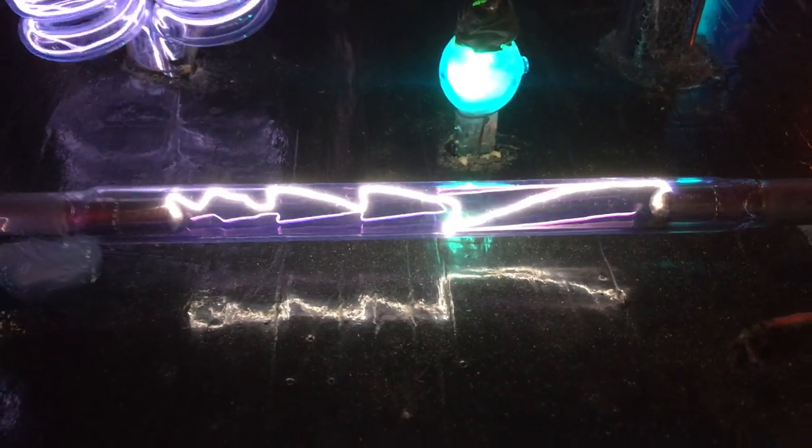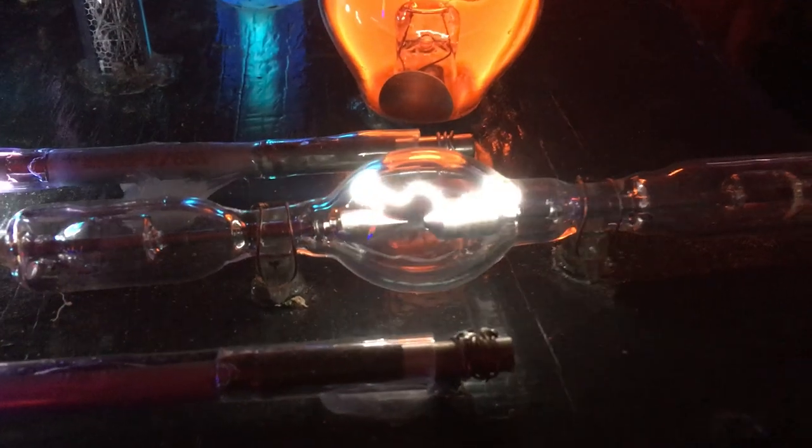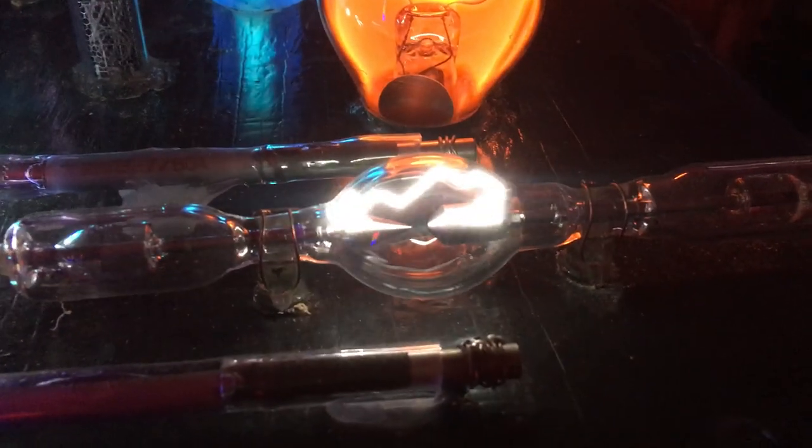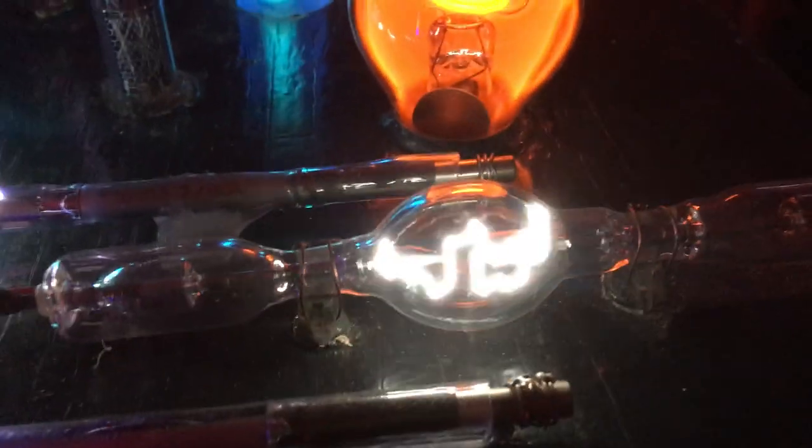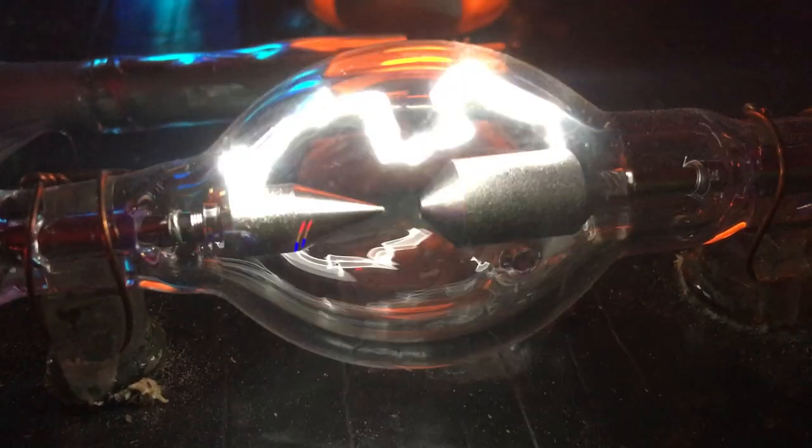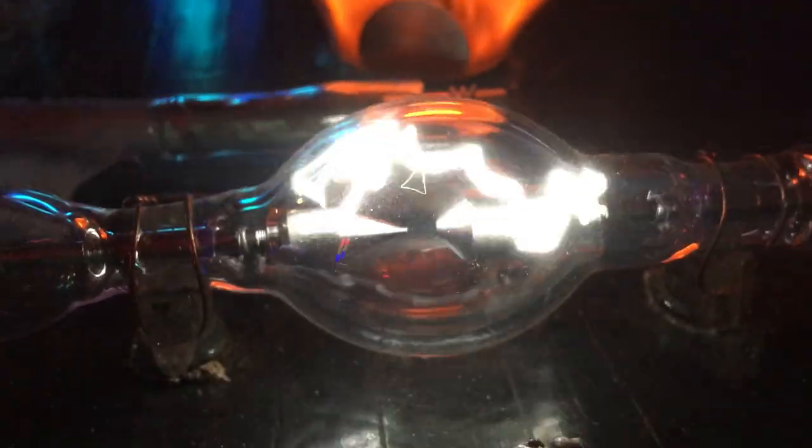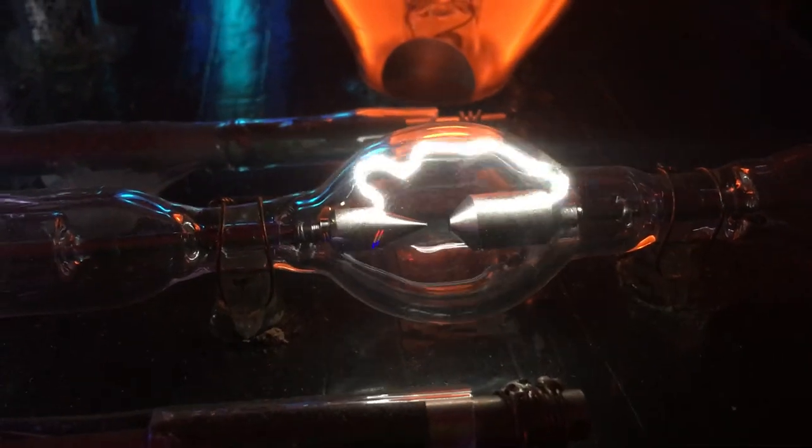Over here we have a projector bulb. It's a xenon projector bulb for film projectors for movies. If you give it anything under 30 kilovolts it just arcs where it's supposed to. It's essentially an arc lamp, but when you drive it with really high voltage like the flyback television flyback that I've got powering it, you get these really cool arc effects.